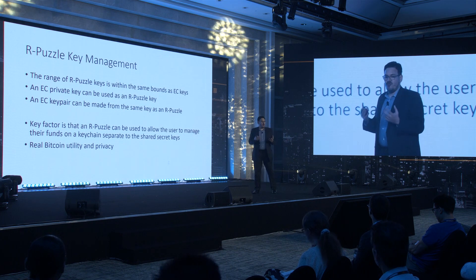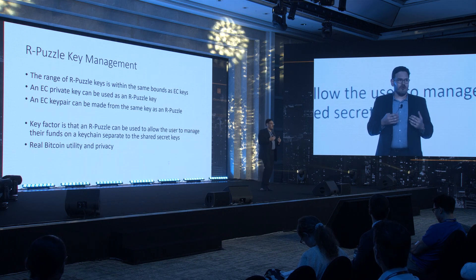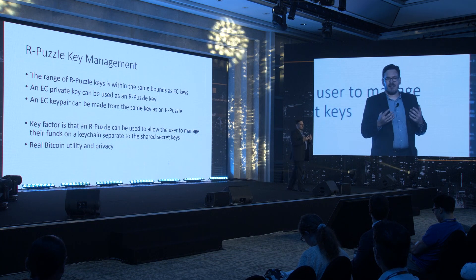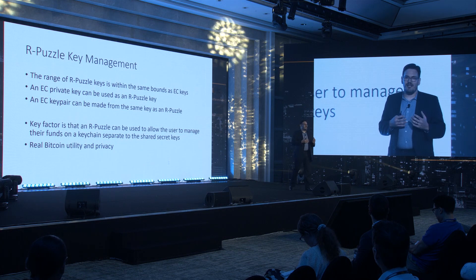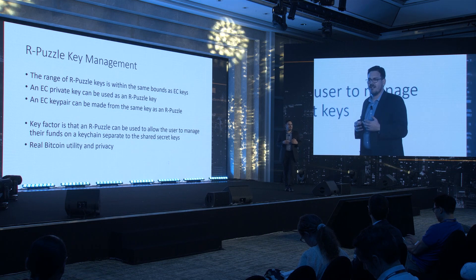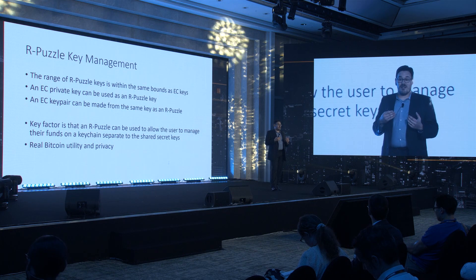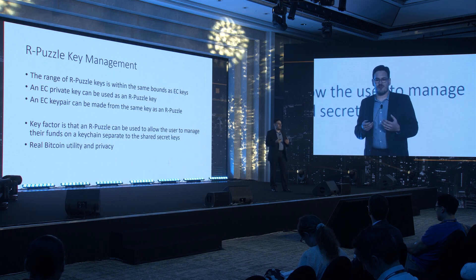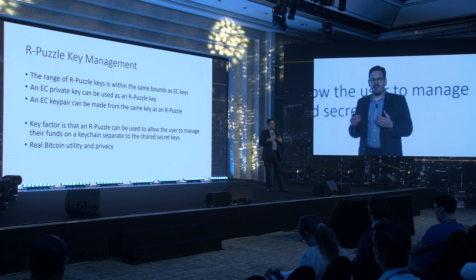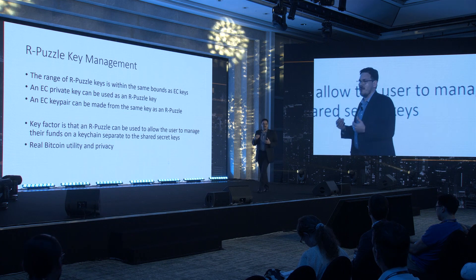It's important to note when managing R puzzle keys that the K and R values used in the creation of R puzzles use the same numeric range and mathematics as public-private key pairs used in elliptic curve keys and signatures. This means that the techniques described in the previous slides are also applicable to R puzzle keychains. What an R puzzle gives us is the ability to solve an input puzzle with a known K value from one keychain while signing the MetaNet data with a separate MetaNet key pair from its own keychain, all within the same signature.